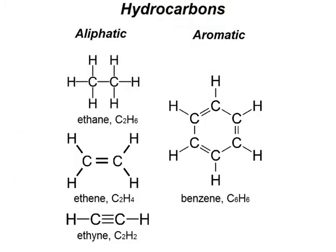Let's look at some examples. On the left we have aliphatic and on the right we have aromatic compounds. The most famous example of an aromatic compound is benzene — C₆H₆. On the left, we have aliphatic examples: ethane for alkane, ethene for alkene, and ethyne for alkyne.